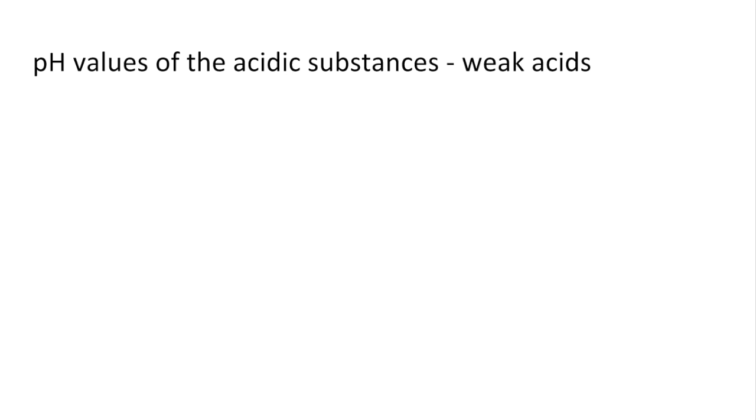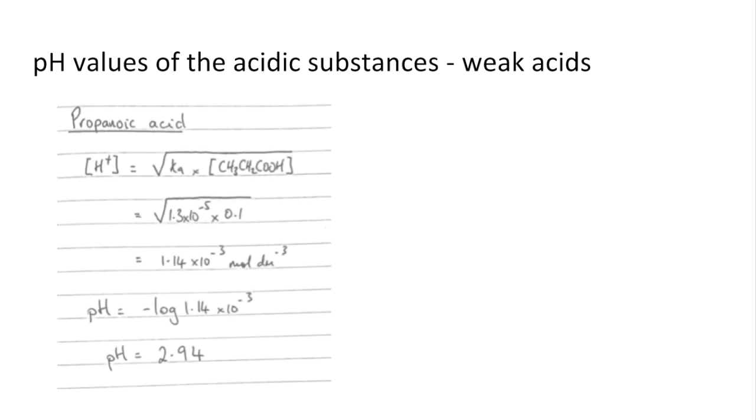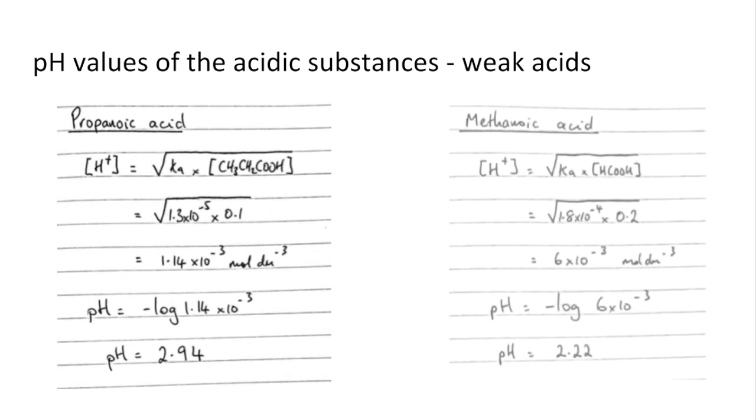The weak acids now, so there were two of those: propanoic acid and methanoic acid. To calculate the H plus concentration, it's the square root of the Ka multiplied by the concentration of the acid. And then just minus log the H plus concentration and you can see I'm getting 2.94 for propanoic and 2.22 for methanoic.